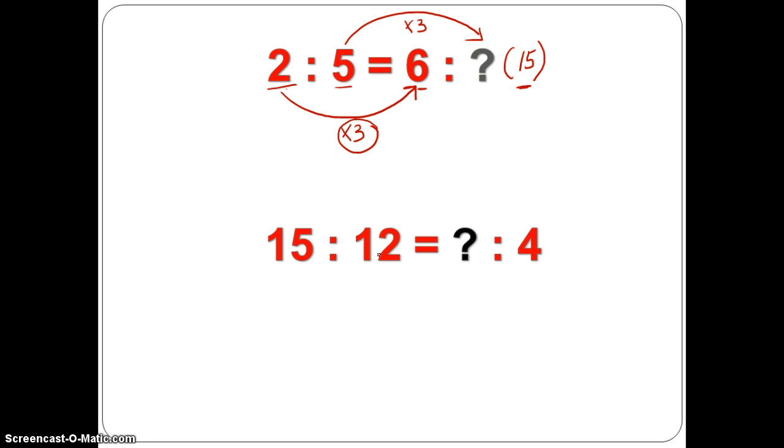15 is to 12 equals to how many? So now, I look at 15 and 12 and I know that their common multiple is 3. So 12 divided by 3 is 4. 15 divided by 3 is 5. 5 times 3 is 15, 4 times 3 is 12. Did you see that I use the multiplicative approach?